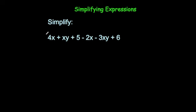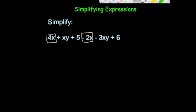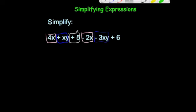Let's have a look and see what our like terms are. We've got 4x and minus 2x, we have plus xy and minus 3xy, and finally plus 5 and plus 6. So our like terms are x's, xy's, and our numbers.